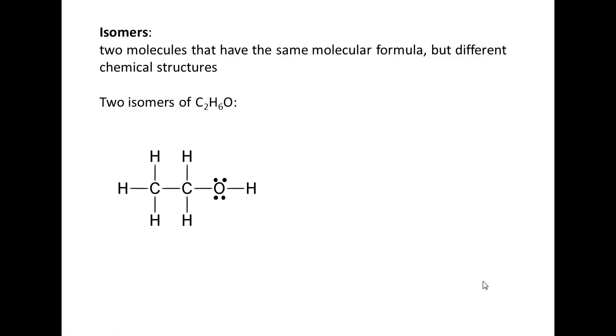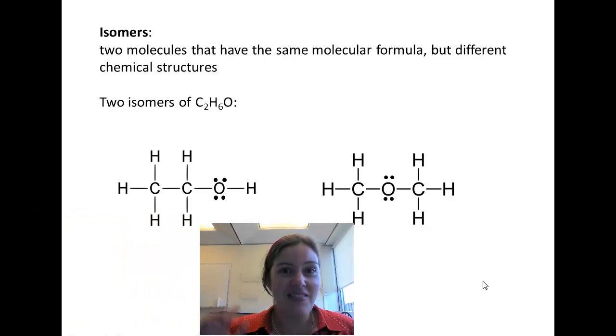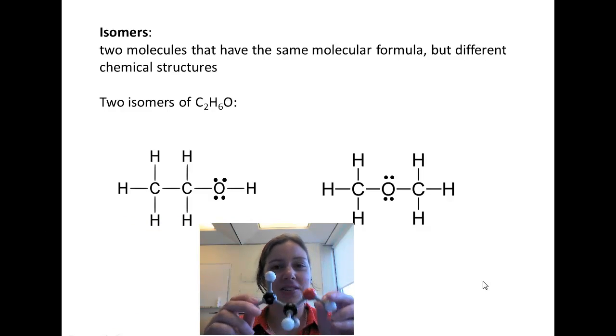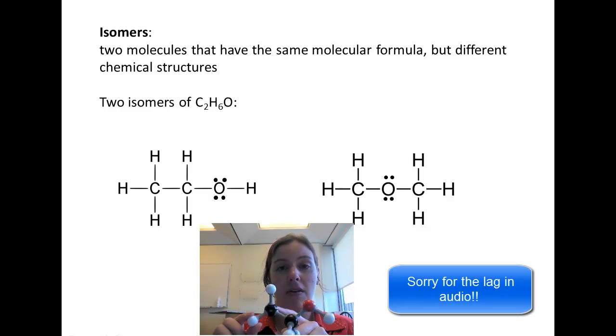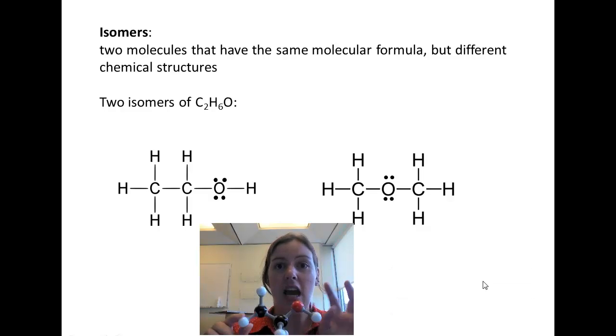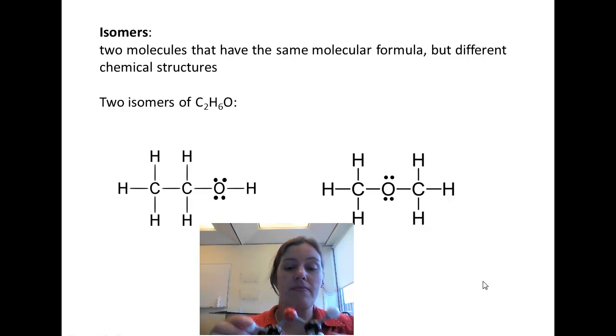Here are two isomers of the molecule C2H6O. And in order to show you the difference between these two, I'm actually going to be in this video. Hi! So let me show you what the first structure looks like. So our first structure looks like this. In order to tell the difference between them, I want you to look at the central atoms. We have two carbons and an oxygen. The two carbons are in a row, and then the oxygen is on the end. If we look at the other structure, you're going to notice that the central atoms are in a different order. So we still have two carbons and an oxygen, but now the oxygen is in the middle of the two carbons.